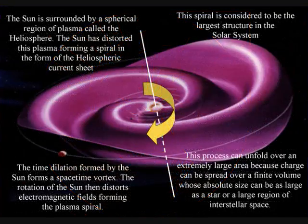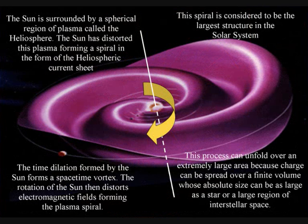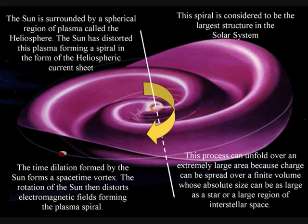We don't have to leave the solar system to see a similar spiral, with the Sun's rotating magnetic field acting on the plasma in the interplanetary medium. This spiral forms the largest structure in the solar system, and is not just relative to the energy and mass of the Sun.